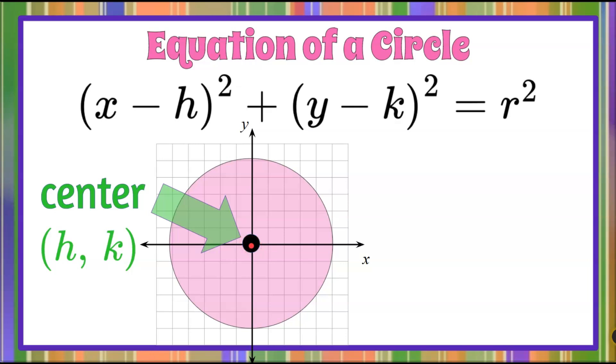So in this case, this would be 0,0. It's not always 0,0 though. When I look at the formula, I would take my center point, whatever that ordered pair was, and replace the variable h with the x-coordinate and the variable k with the y-coordinate of the center.